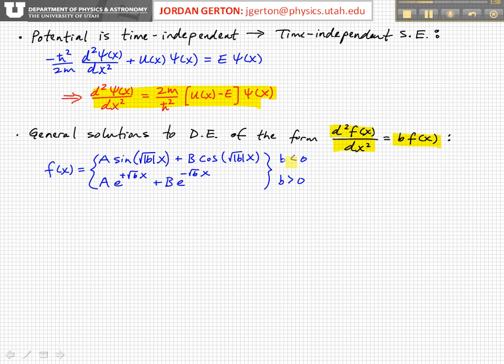So when b is less than zero, okay, so in this case when this term here 2m over h bar squared u of x minus E is less than zero, then we get oscillatory solutions. So we get A sine square root of the magnitude of b times x, plus B cosine square root of absolute magnitude of b times x. Again, that's when b is equal to, is less than zero.